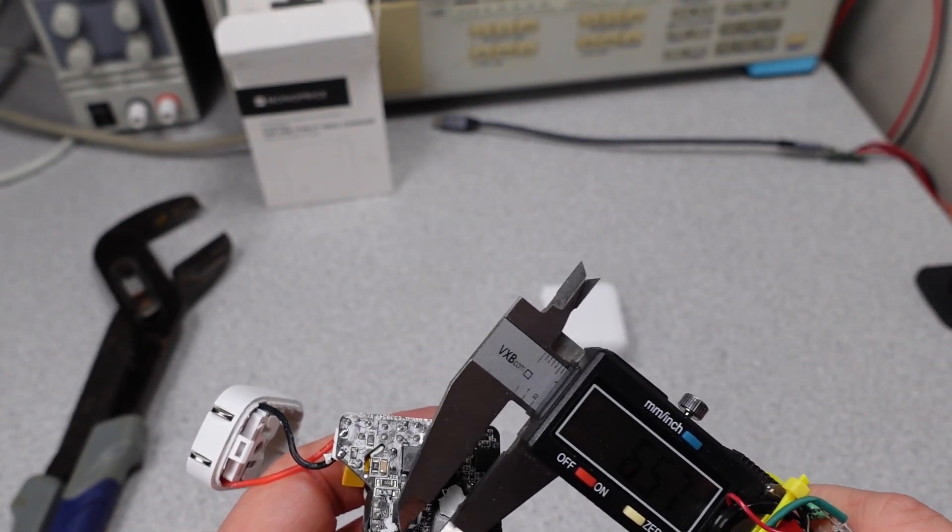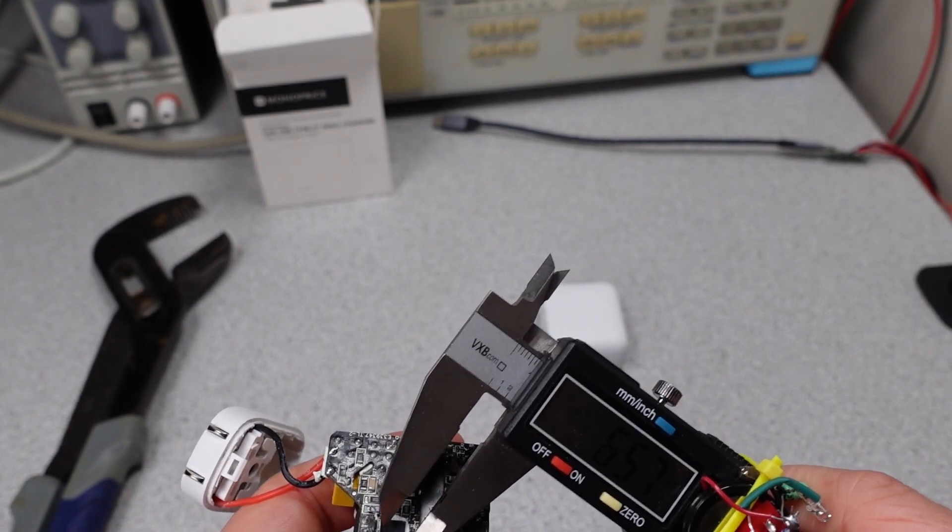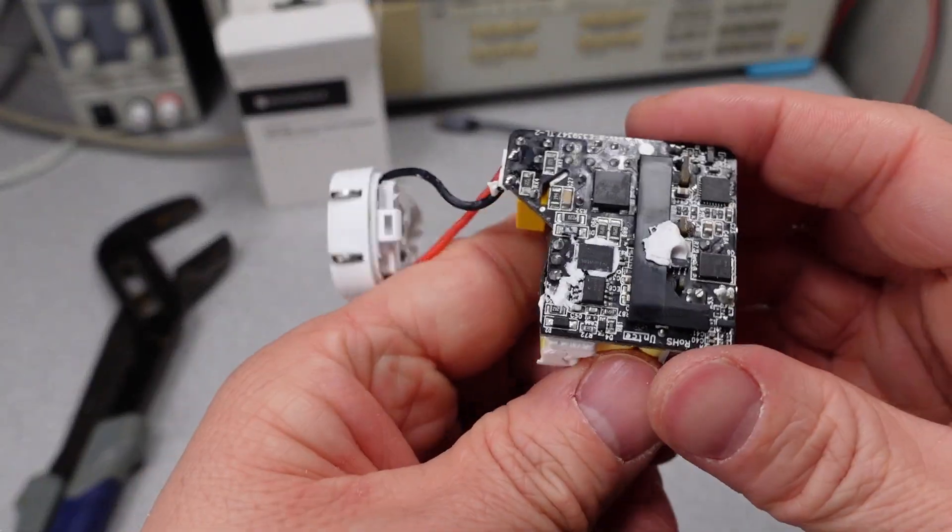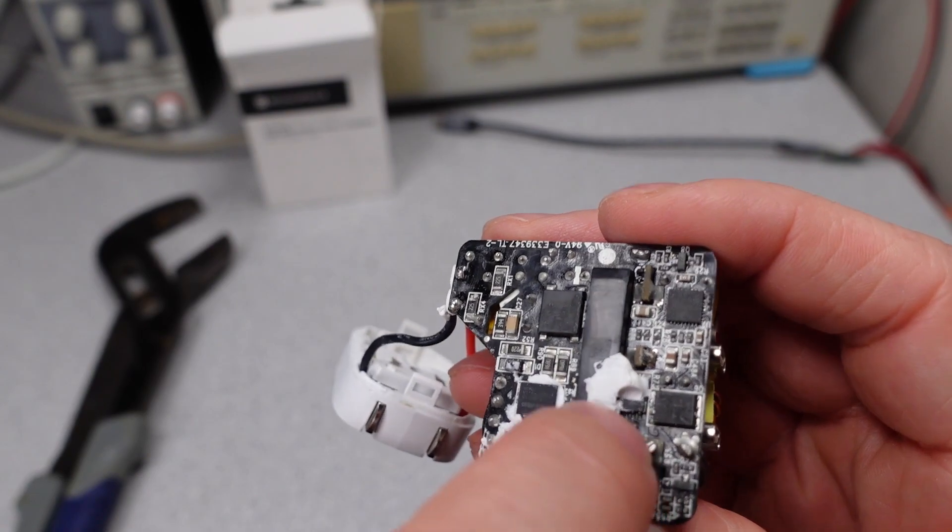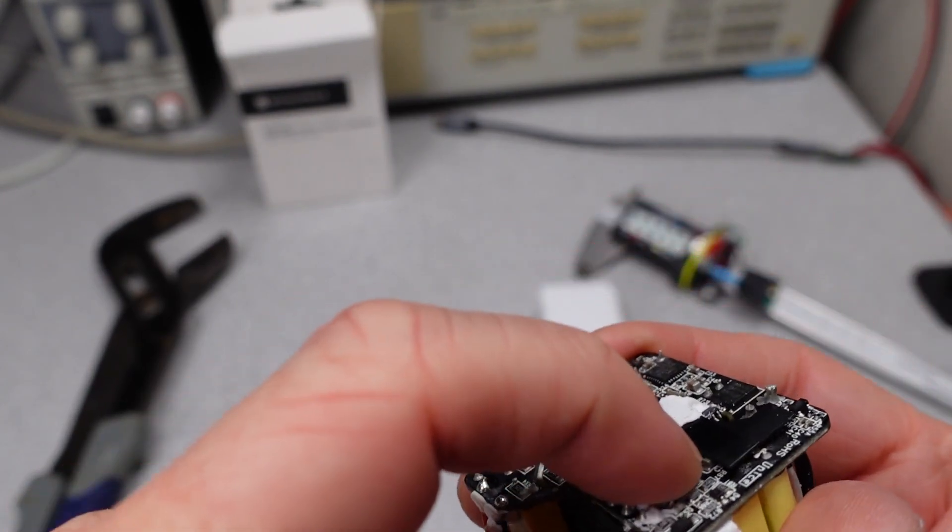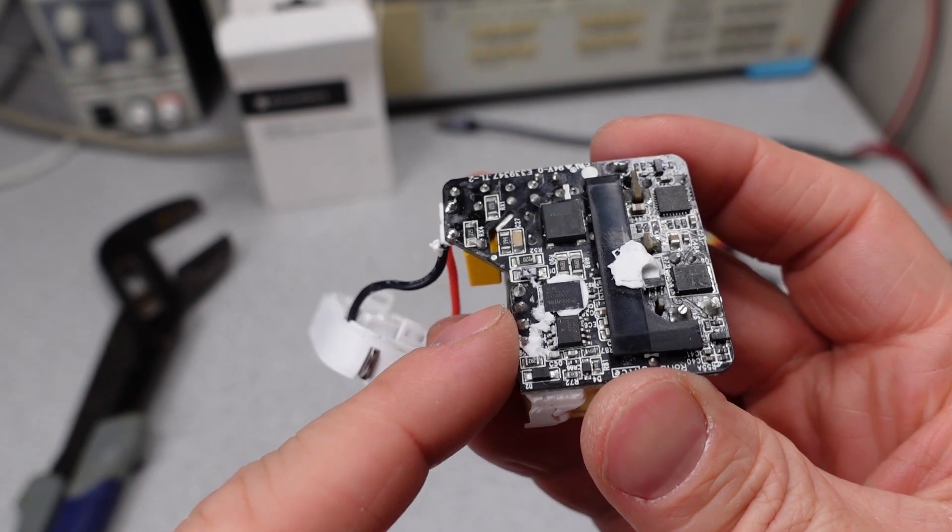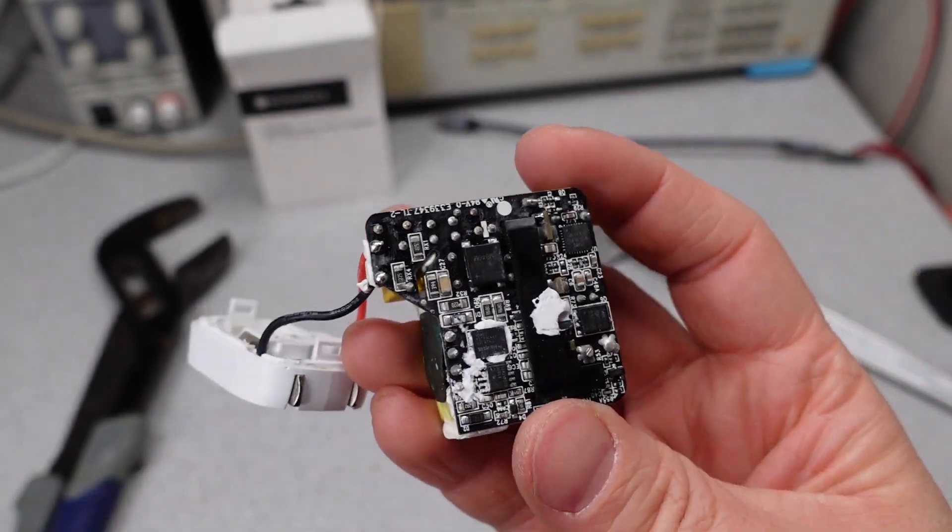And then they're increasing the clearance by having this physical barrier between the two sides. So the electrical signal has to go up this plastic, over, down, and then connect to the board. And that distance is also far greater than 6 millimeters. So that's excellent clearance.